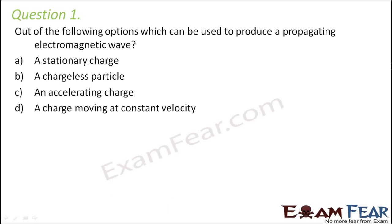Question number one: out of the following options, which can be used to produce a propagating electromagnetic wave? Before we look at the options, what do we need for an electromagnetic wave? An electromagnetic wave must have an electric field and a magnetic field such that the electric field and the magnetic field are perpendicular to each other and also perpendicular to the propagation of wave. That's the requirement.